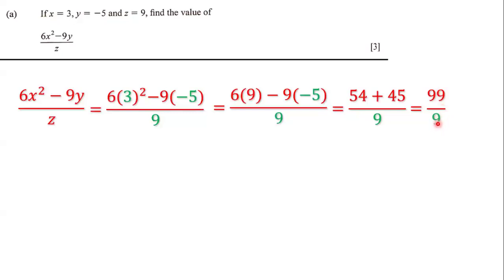So we have 99 divided by 9, and 99 divided by 9 is definitely 11. And so that means that our answer here is 11. 11 is the correct answer to this question.